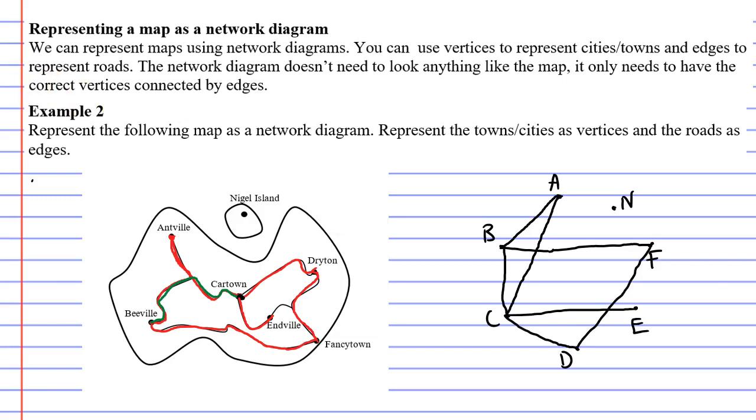We can also see that Dryton can connect to Antville without passing through any other towns or cities or passing through any other vertices. So that means they are directly connected as well. D connects to E.